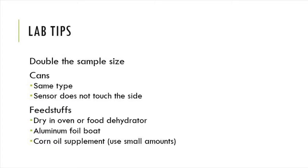Some quick tips: consider doubling the sample size if you have had failure with the three grams of feedstuff samples burning — go ahead and double it and see what happens. Next, make sure that your cans are the same type. If you have a large monster can for one lab station and a juice can for another, you have different surface areas and metal components and they're going to conduct the heat energy from the feedstuff a little differently.